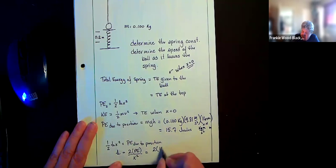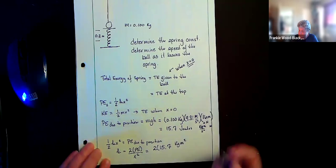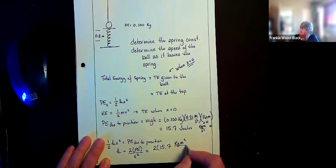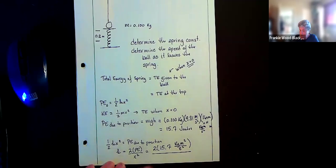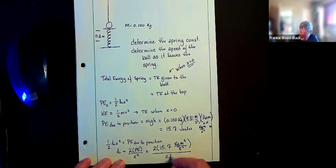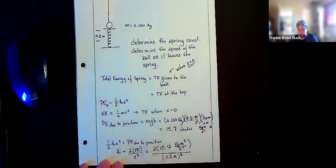And we've got kilograms meters squared per seconds squared, divided by x, which is 0.2 meters squared.